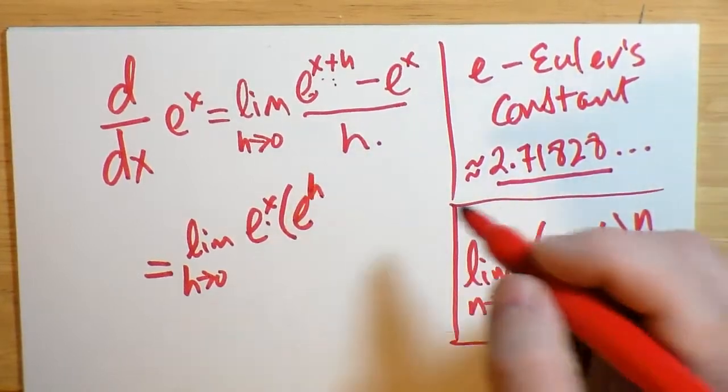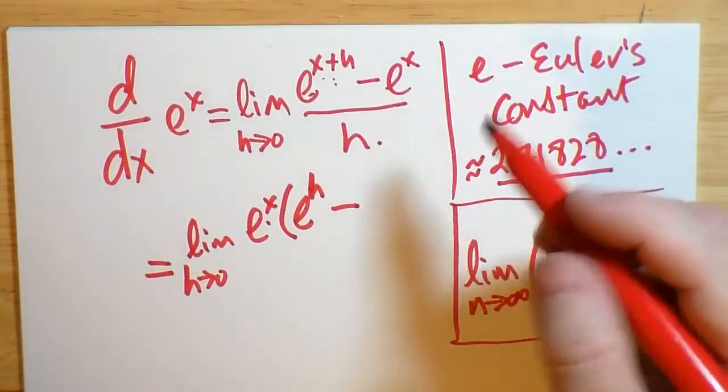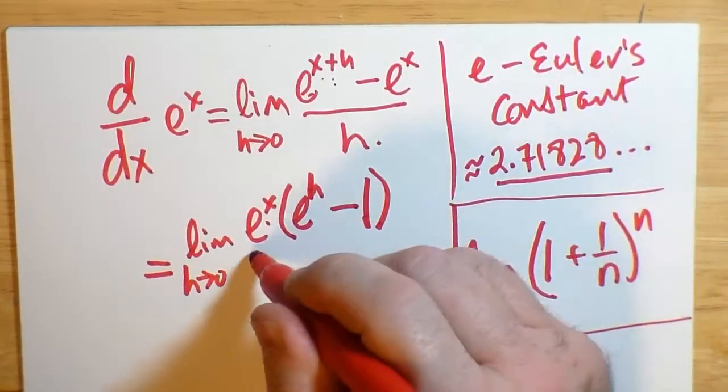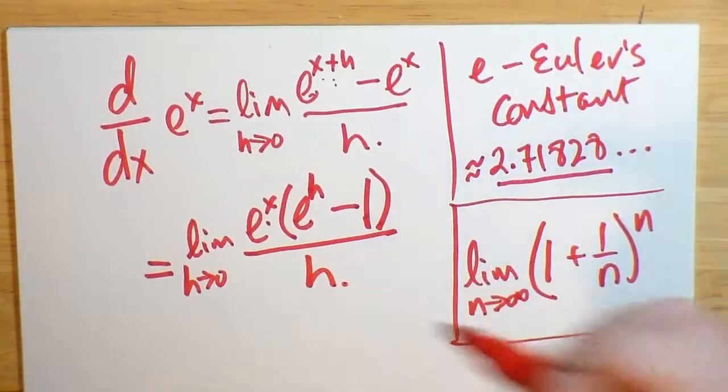We're left with e to the h subtract, well, e to the x minus e to the x, that's 1. And the bottom is untouched. It's h.